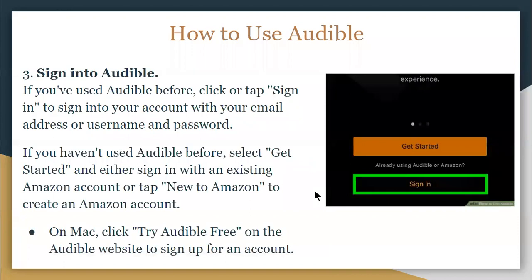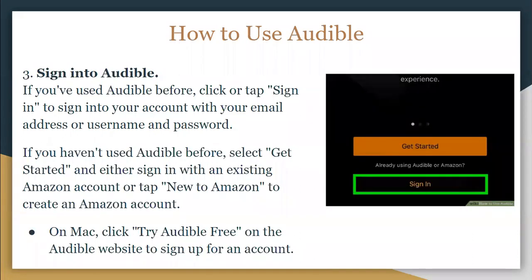If you've used Audible before, you can click or tap Sign In to sign in with your email address or username and password. If you haven't used Audible before, you can select Get Started and either sign in with an existing Amazon account or tap New to Amazon to create one. On Mac, you also have the option to click Try Audible for Free on the Audible website.